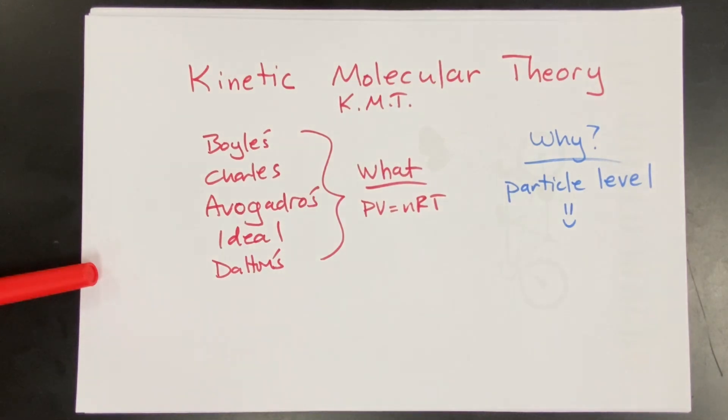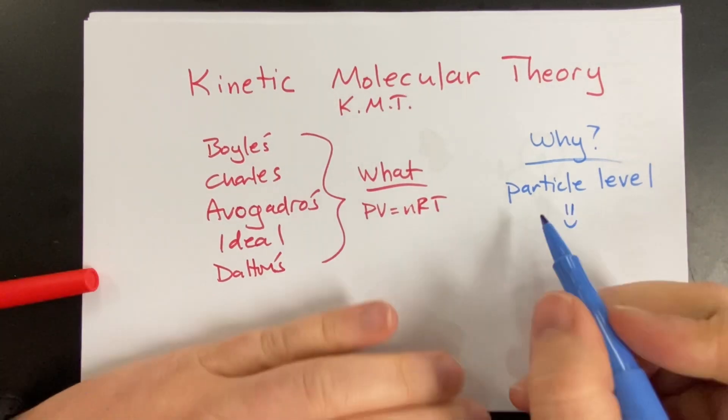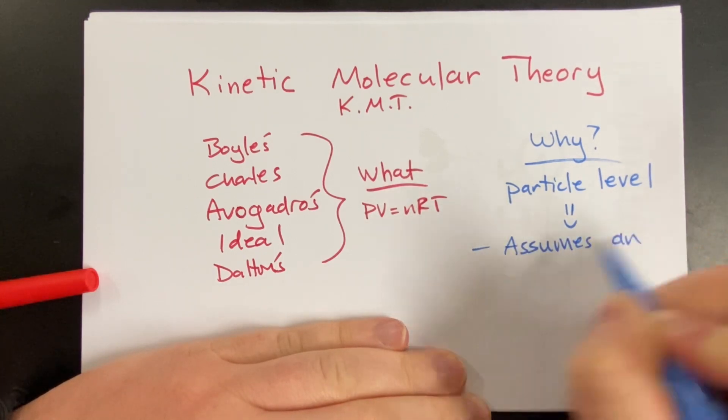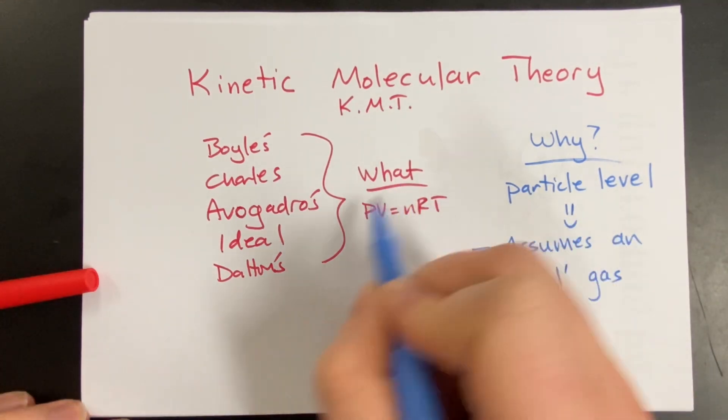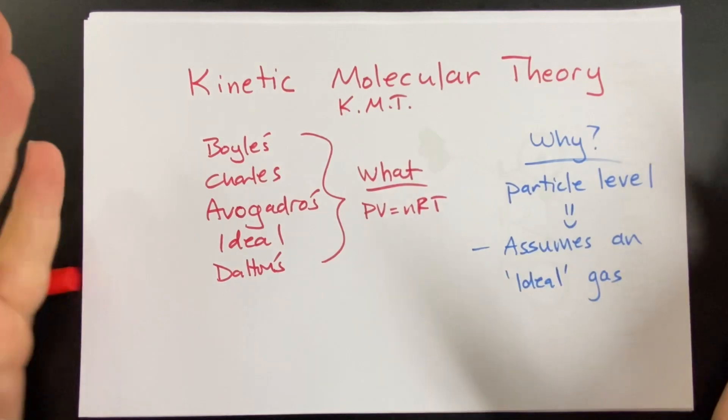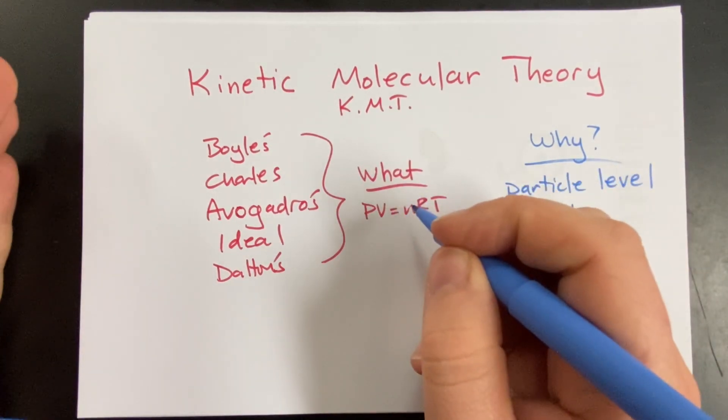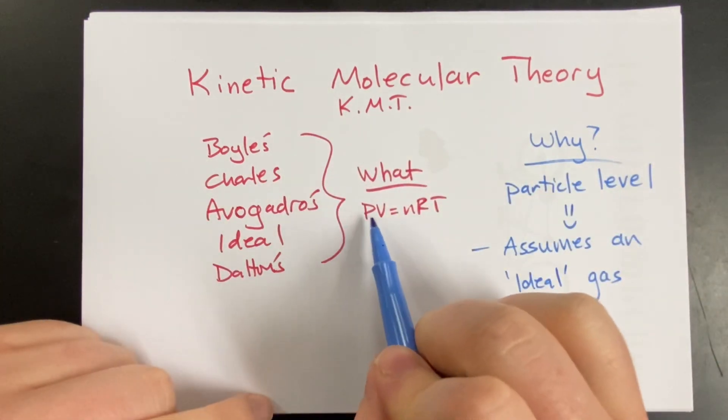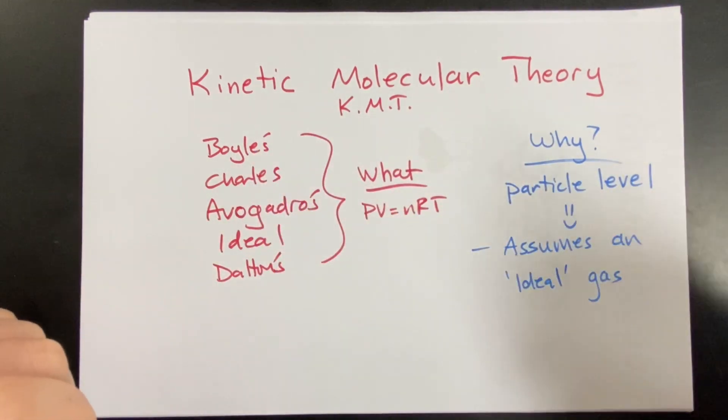It does make a couple of assumptions. Kinetic molecular theory assumes an ideal gas. What's an ideal gas? An ideal gas is one that follows these laws. It follows the ideal gas law. You say, wait a minute, miss. You've been telling me all these laws. What do you mean to tell me there's some gases that do not follow those laws? Okay, listen. They're pretty close. I wasn't really lying to you. Like, they're pretty close, but sometimes they're a little off. We're just going to assume our gases are perfect and they perfectly follow all of these laws. That's an ideal gas.